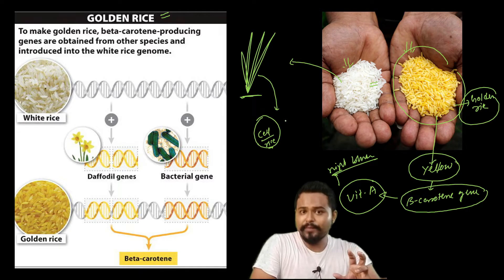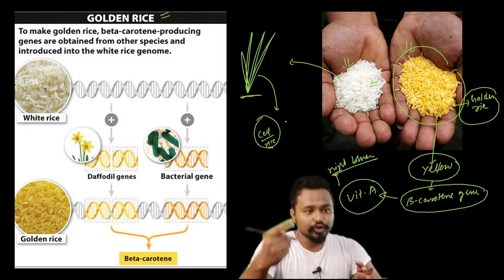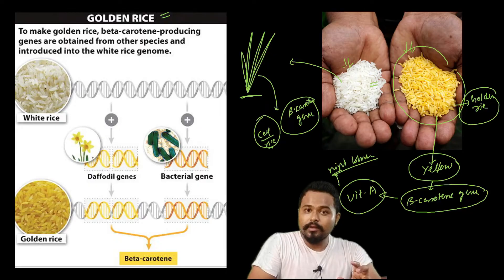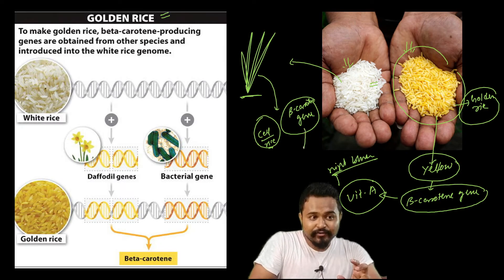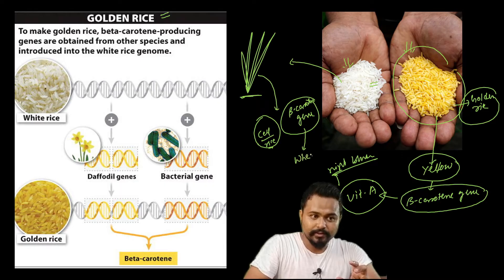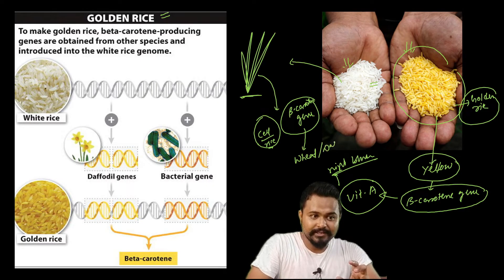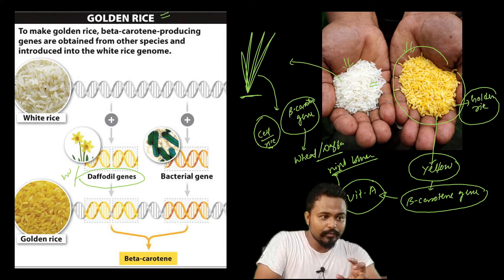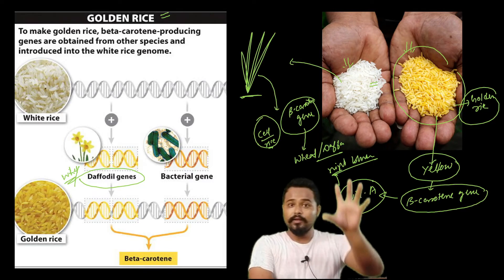With the help of biotechnology tools, the beta-carotene gene is inserted into rice. This beta-carotene gene comes from different plants — for example, the daffodil plant. This is the daffodil gene, which contains the beta-carotene gene.